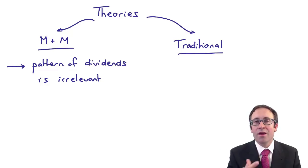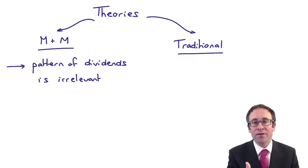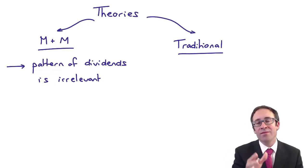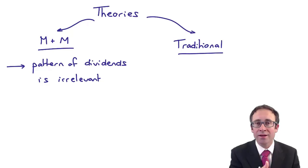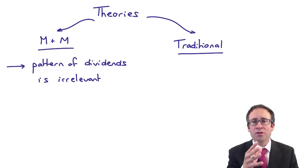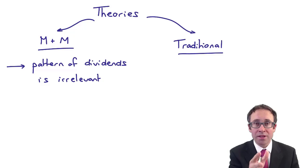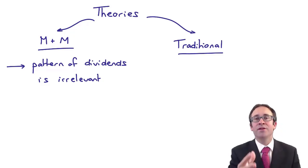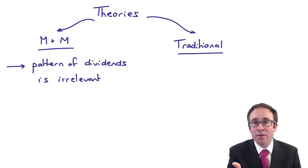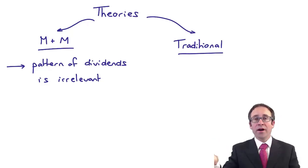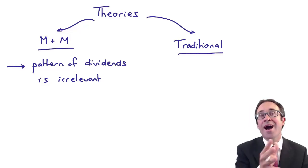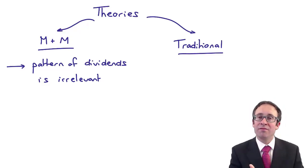Modigliani and Miller said that that pattern — the fact that it's gone up and down — is irrelevant; it makes no difference to shareholder wealth. The value of the business is the present value of the future dividends, and discounting back to present value should remain the same regardless of the level of dividends. When you take that dividend and invest it in a positive NPV project, you are generating wealth for shareholders. If the business can find a positive NPV project, invest that money; otherwise, pay it out as a dividend. Shareholders will be indifferent if they receive the required rate of return.